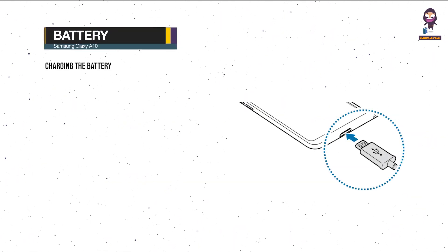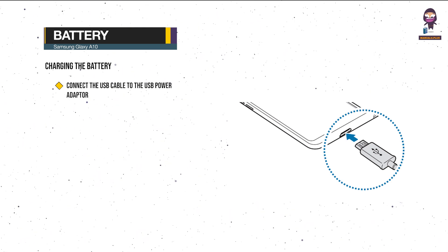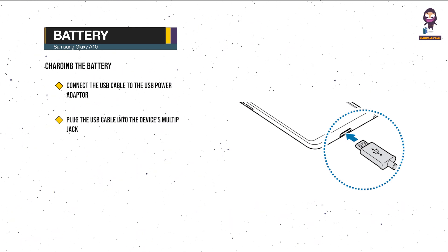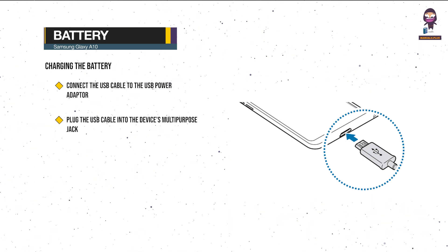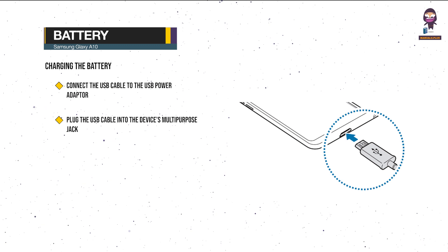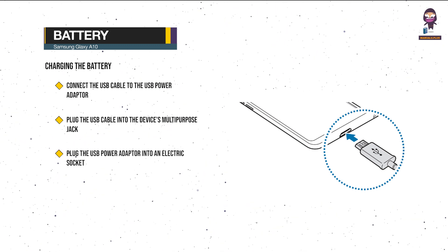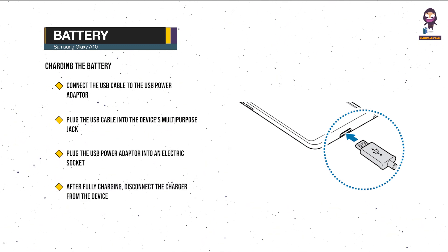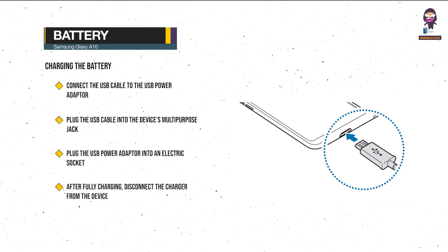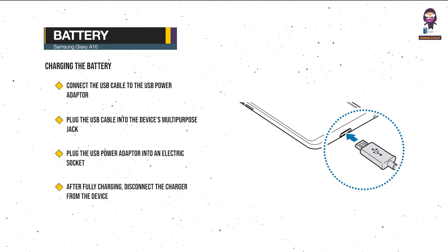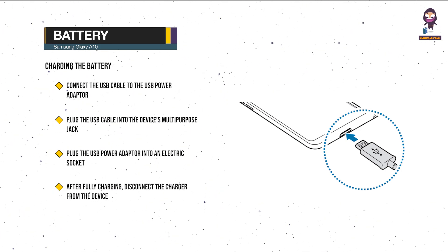Charging the battery: connect the USB cable to the USB power adapter. Plug the USB cable into the device's multi-purpose jack. Plug the USB power adapter into an electric socket. After fully charging, disconnect the charger from the device, then unplug the charger from the electric socket.